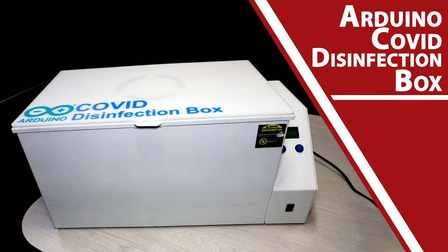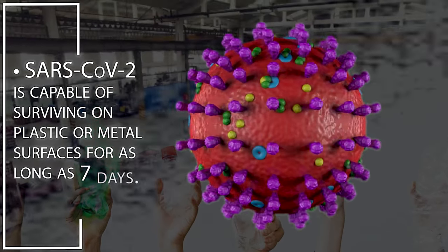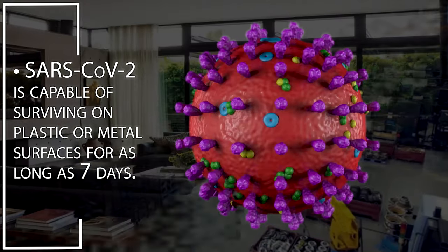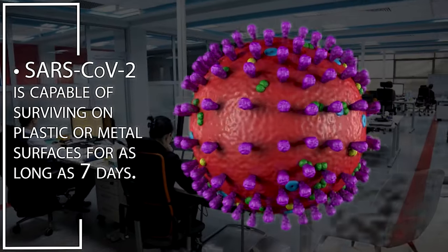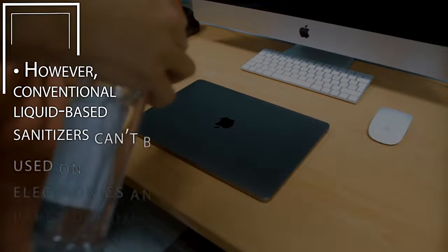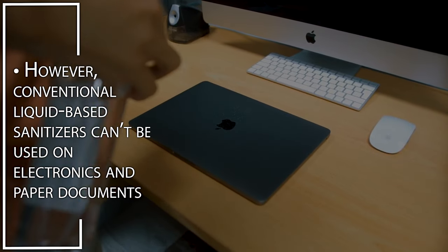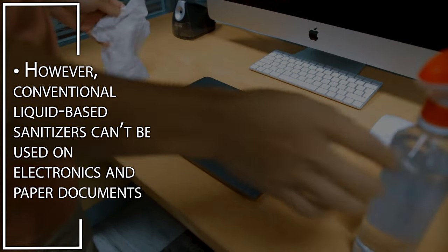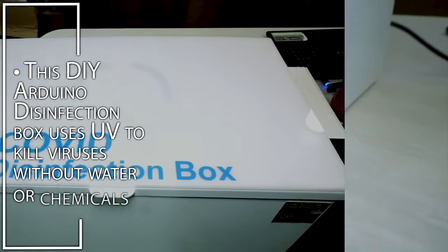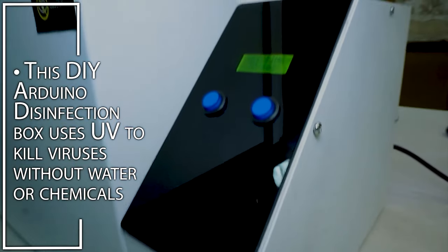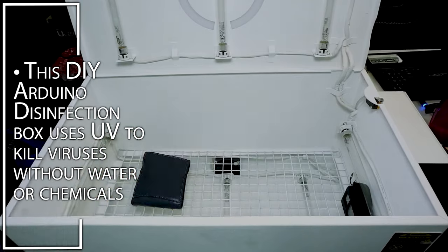Arduino COVID Disinfection Box. SARS-CoV-2 is capable of surviving on plastics or metal surfaces for as long as 7 days. However, conventional liquid-based sanitizers can't be used on electronics and paper documents. This DIY Arduino disinfection box uses UV to kill viruses without water or chemicals.